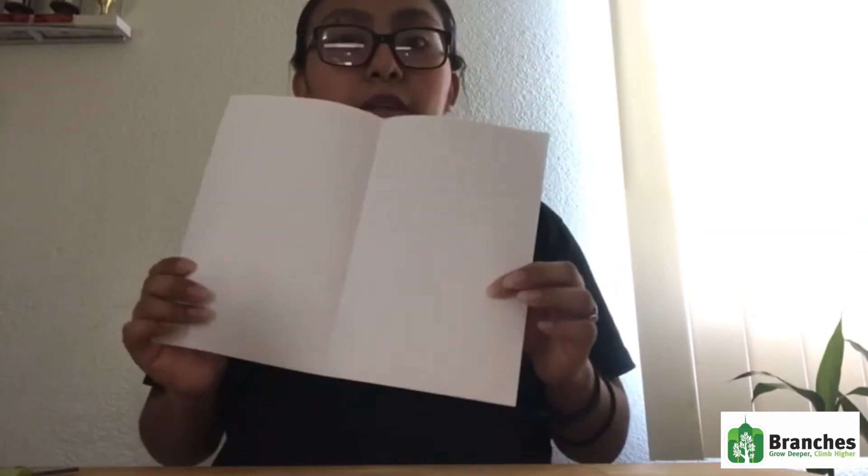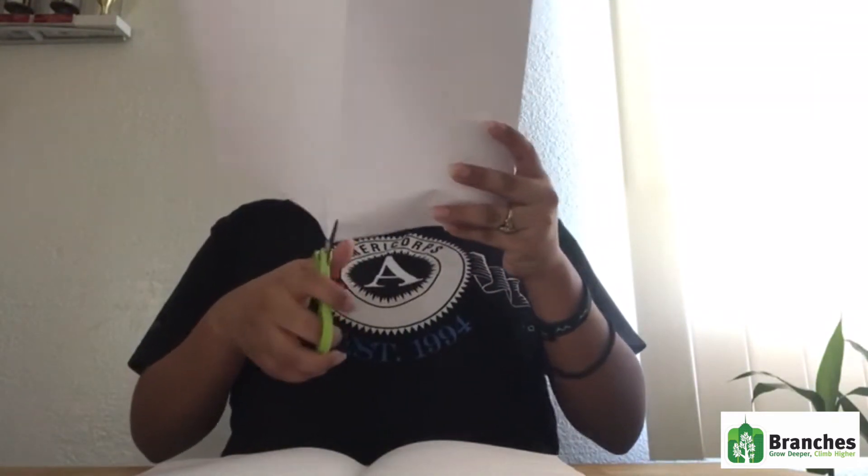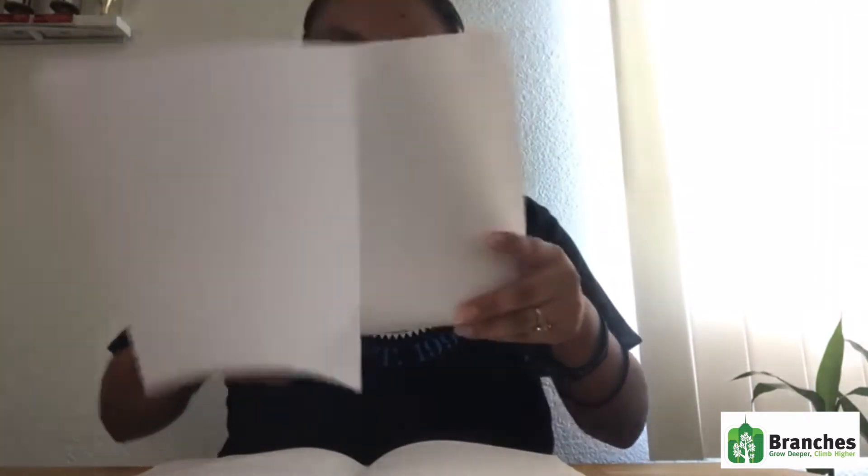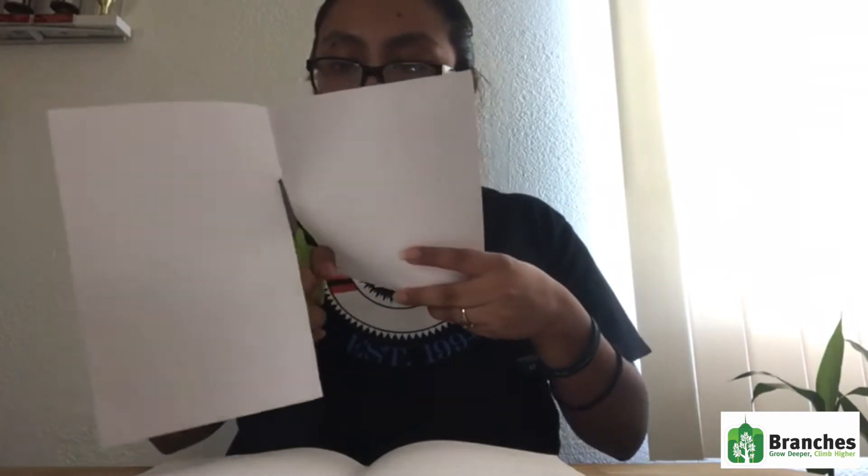Now that you've got your six pieces of paper, make sure you fold them in half and then we're gonna cut them. Grab your scissors and cut it down in the middle. You should have two blank sheets of white paper now. Pause the video, do that, and then let's continue.